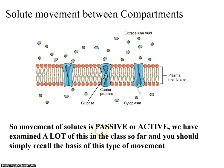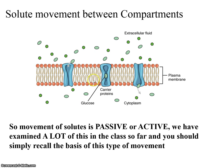Movement of solutes is passive or active — it depends on its chemistry. We examined a lot of this in class so far, both in the urinary and the digestive. Passive or active requires ATP. Diffusion wouldn't require a channel, gate, pump, or carrier, but other things like glucose that are charged do. Throughout most of the body, water is following the solutes. So if glucose is coming in, water is coming in with it.